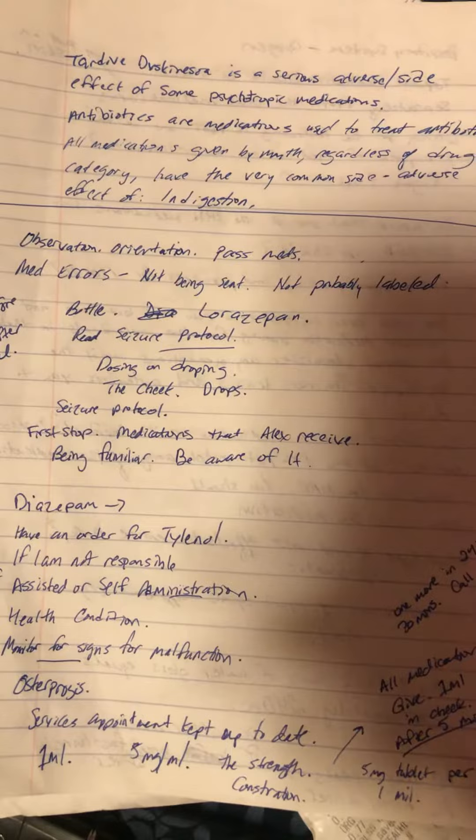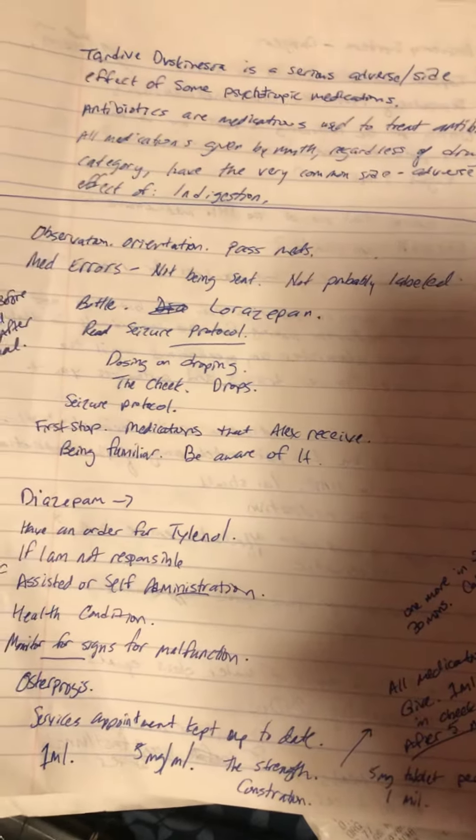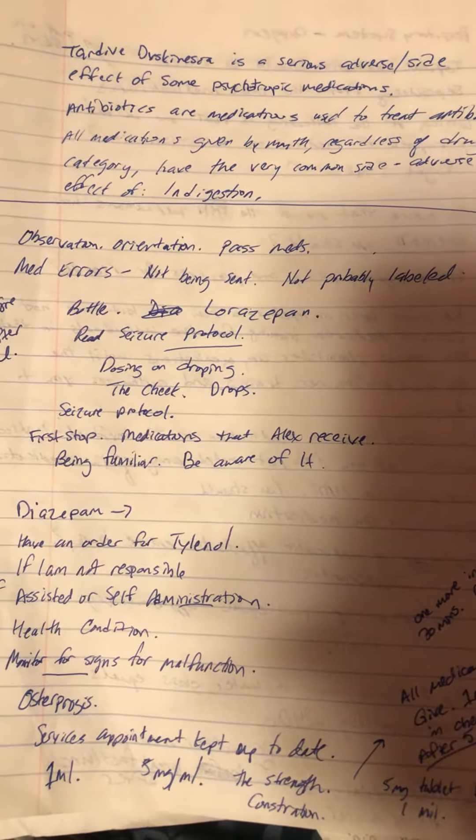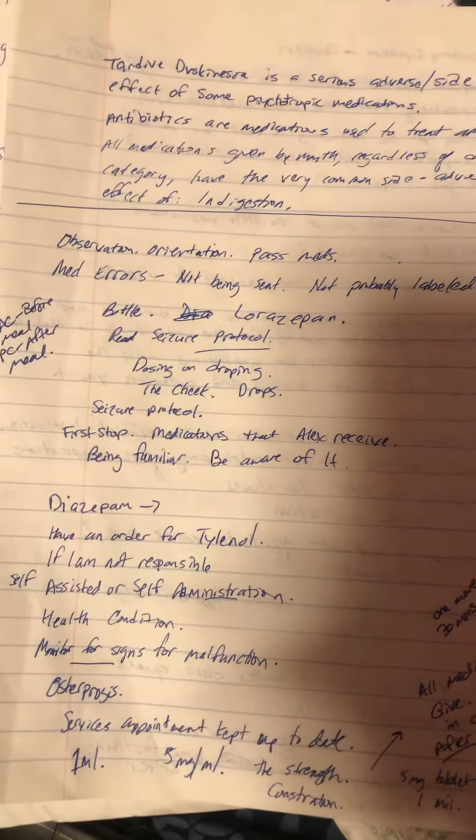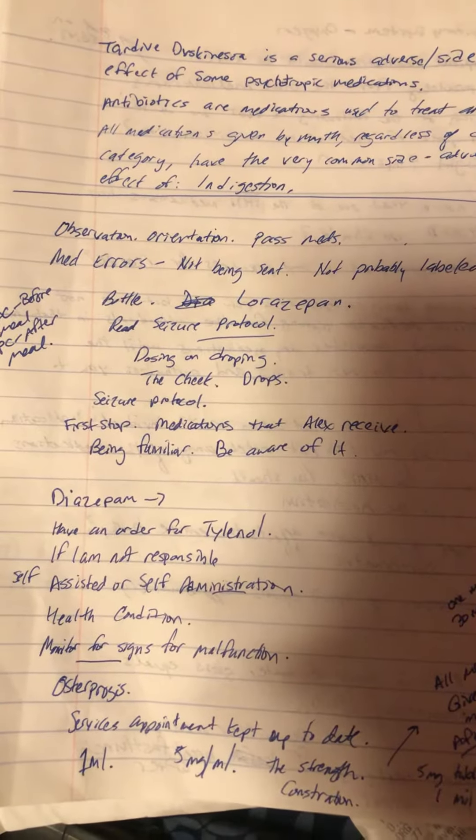Everybody has seizure protocols and stuff, and you need to get clarification. This is for my job because I work with vulnerable adults. We talked about medication errors — med errors is not being able to administer medication properly. Valium or diazepam is for anti-seizure medications.